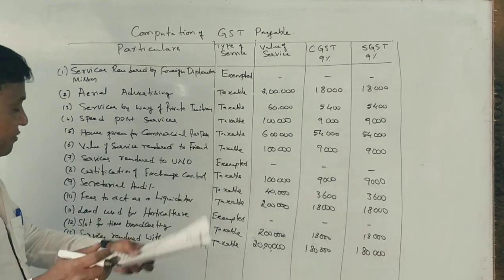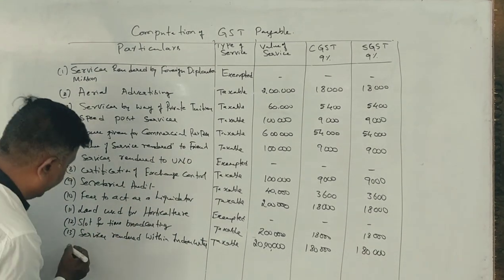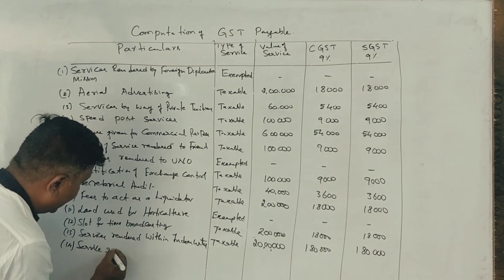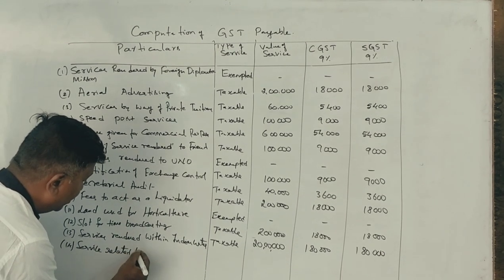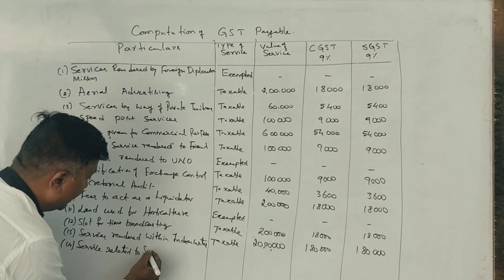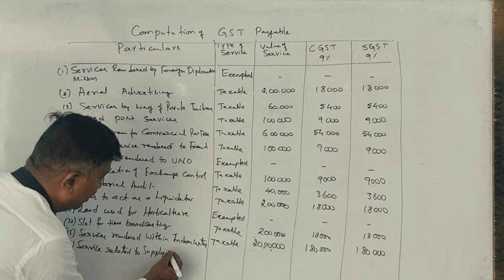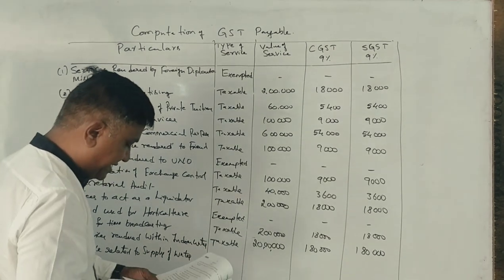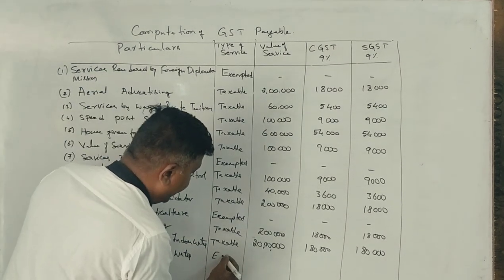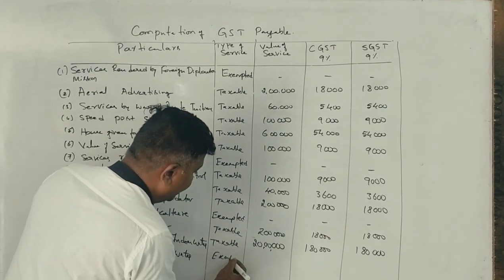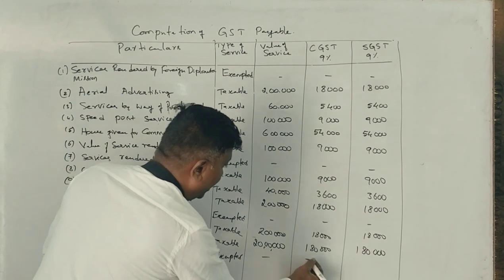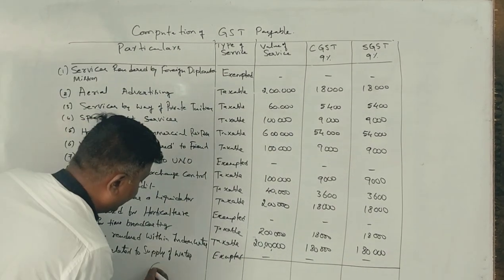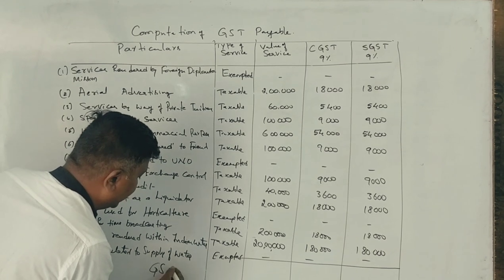Service related to supply of farm labor — exempted. Service related to supply of water to agriculture — exempted. Now we can see what the total GST payable is.